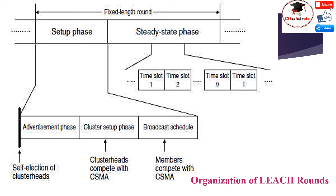The protocol is organized in rounds, and each round is subdivided into a setup phase and a steady state phase, as shown in the figure. The setup phase starts with the self-election of nodes to cluster heads. In the following advertisement phase, the cluster heads inform their neighborhood with the advertisement packet. The cluster head contends for the medium using a CSMA protocol with no further provision against the hidden terminal problem. Non-cluster head nodes pick up the advertisement packet with a strong received signal strength. In the cluster setup phase, members inform their cluster head again using a CSMA protocol. After the cluster head setup phase, the cluster head knows the number of members and their identifiers. It constructs a TDMA schedule, picks a CDMA code randomly, and broadcasts this information in the broadcast schedule sub-phase.